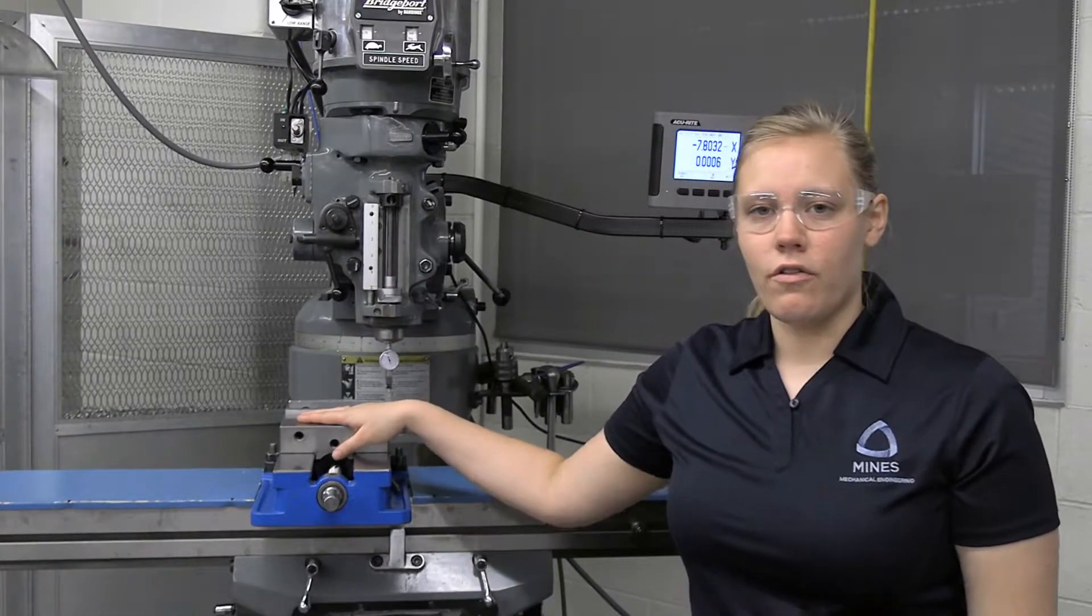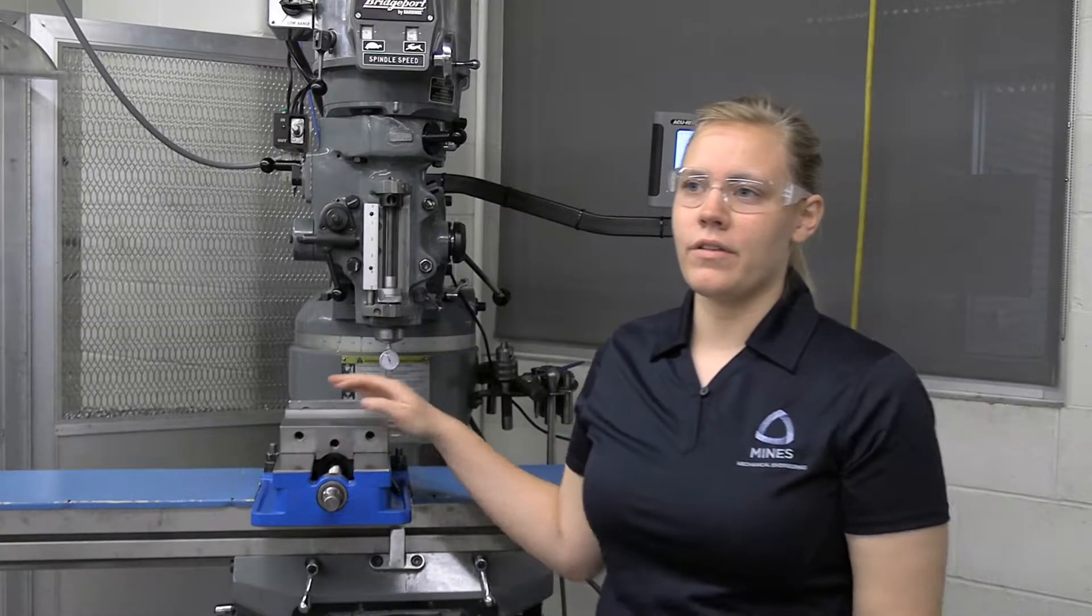Hello, my name is Keely. Welcome to The Machine Shop. Today we're going to be going over checking the alignment of a vise on the mill. This is important because it affects precision. It's critical for machining parts relative to the vise jaws.